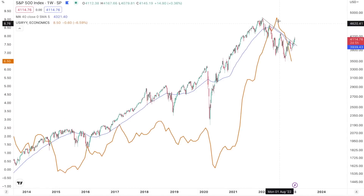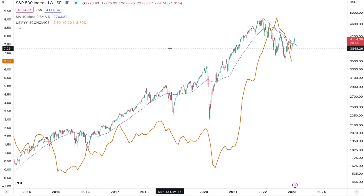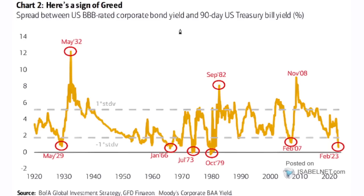All of a sudden, everybody's talking about disinflation, the fact that the Fed's going to pivot, the fact that earnings are actually strong and that they're going to be holding up. And yet underneath the surface, you have these types of charts right here that just completely tell a different story. This is a chart showing you the spread between the yield that you get for holding junk bonds, triple B-rated corporate bonds, against the yield that you get for holding cash, the 90-day US Treasury bill.